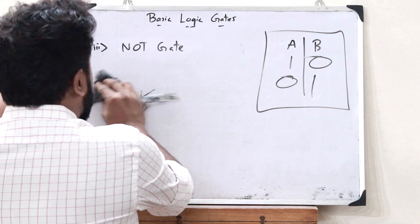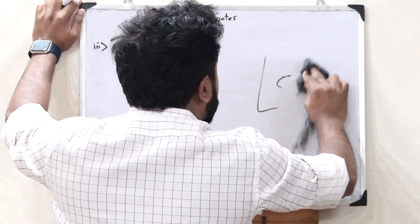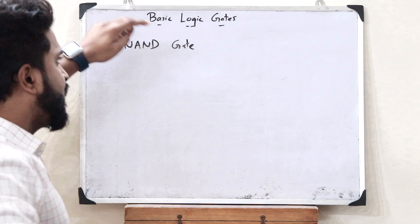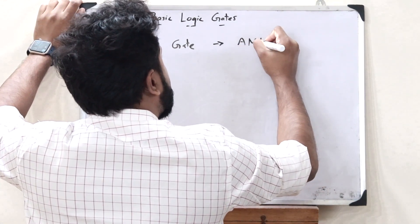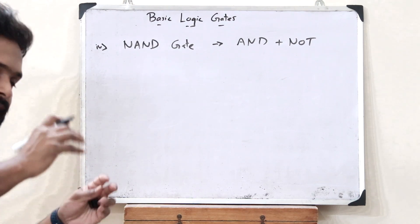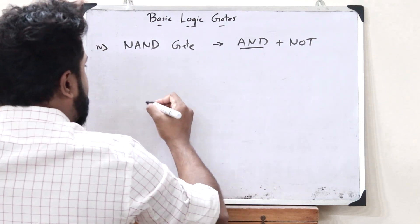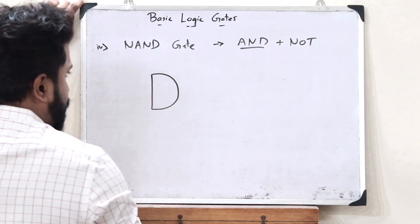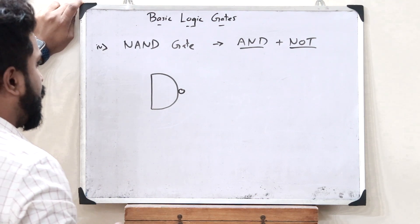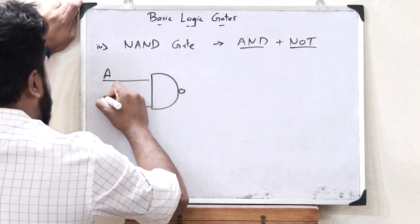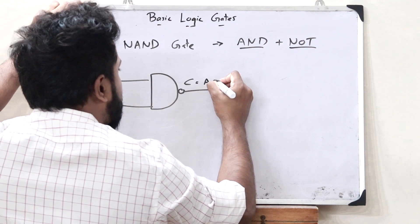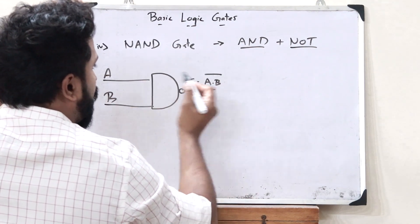Next we have another interesting gate, which we refer to as a NAND gate. A NAND gate is nothing but the inverse or complement of an AND gate. The NAND gate is a combination of an AND gate plus the NOT gate. We know that an AND gate is represented like this, and along with the AND operation, we also perform the NOT operation. So we have two inputs A and B, and an output C, which is nothing but A dot B, the whole complement.